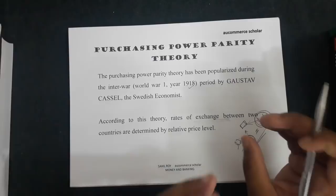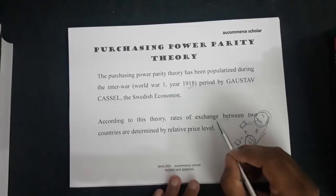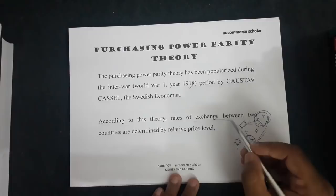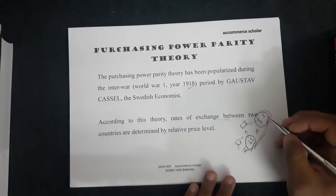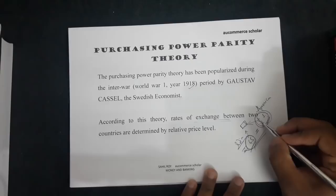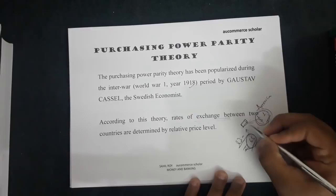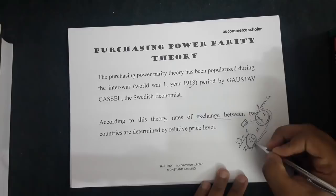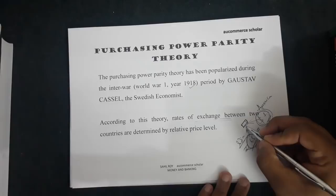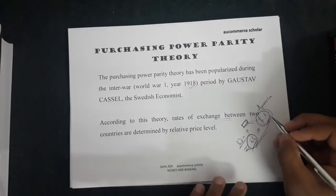According to this theory, the rate of exchange between two countries is determined by relative price levels. For example, one country is India and the other is America. America's 1 dollar equals India's 65 rupees. If you want to buy any goods in India, you can buy them for 65 rupees, and those same goods in America cost only 1 dollar — this is the purchasing power of the American dollar and of India.